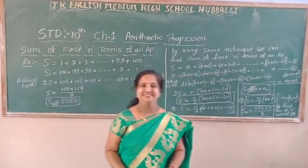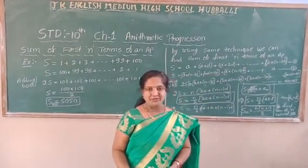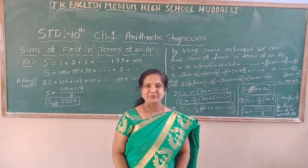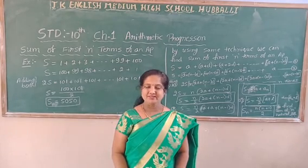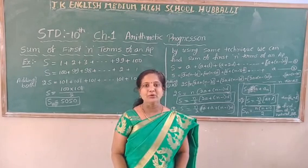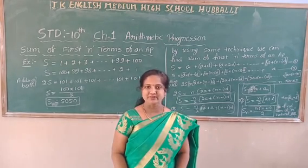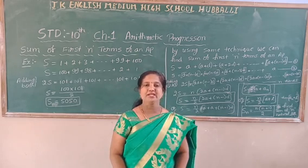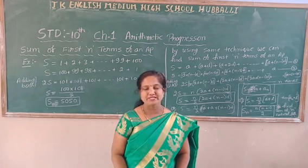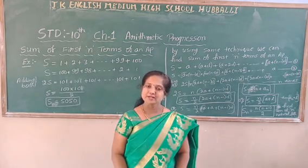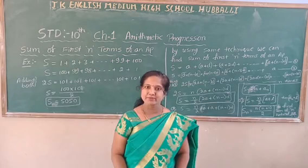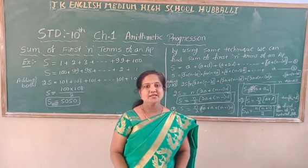Hello children. I have already started arithmetic progression, first chapter. You know what is the general formula for nth term of an AP — that is a sub n equals a plus n minus 1 into d. And the general terms of an AP are a, a plus d, a plus 2d, etc.